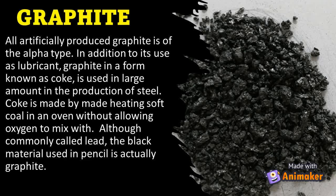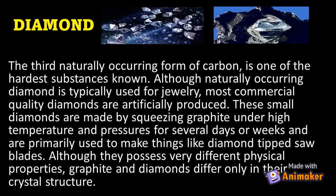In addition to its use as a lubricant, graphite in a form known as coke is used in large amounts in the production of steel. Coke is made by heating soft coal in an oven without allowing oxygen to mix in. Although commonly called lead, the black material used in pencils is actually graphite.